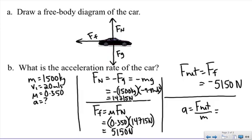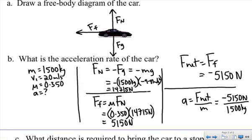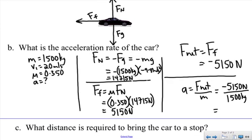So if I go one step down, the net force is 5150. My mass is 1500 kilograms. So my acceleration rate will be negative 3.43 meters per second squared.